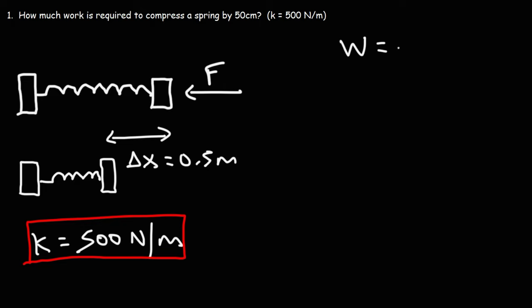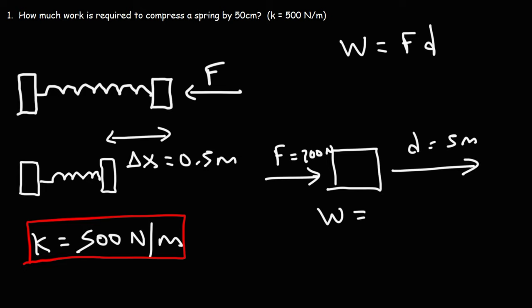The work done by a force is equal to the force times the displacement. So for instance, let's say if we have an object and we apply a force of 200 newtons and we displace this object by 5 meters, the work done by that force on this object is 200 times 5, which is 1,000 joules.